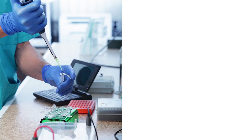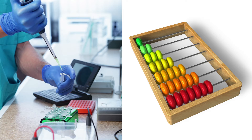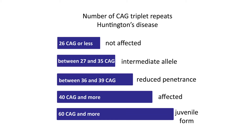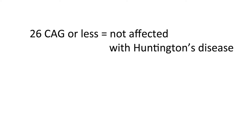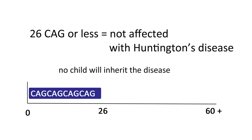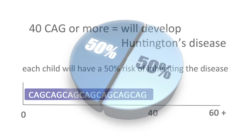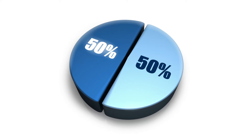A genetic test can count the number of CAG triplet repeats in each of the two copies of the gene. If both copies have 26 repeats or less, this person will never have Huntington's disease. If a person has one copy with less than 26 triplets and the other with 40 triplets or more, then this person will develop the disease. Furthermore, each of their children will have a 50% risk of inheriting the disease.